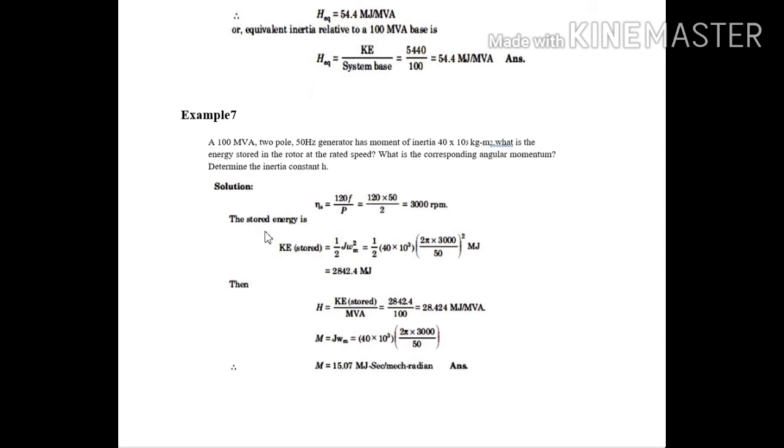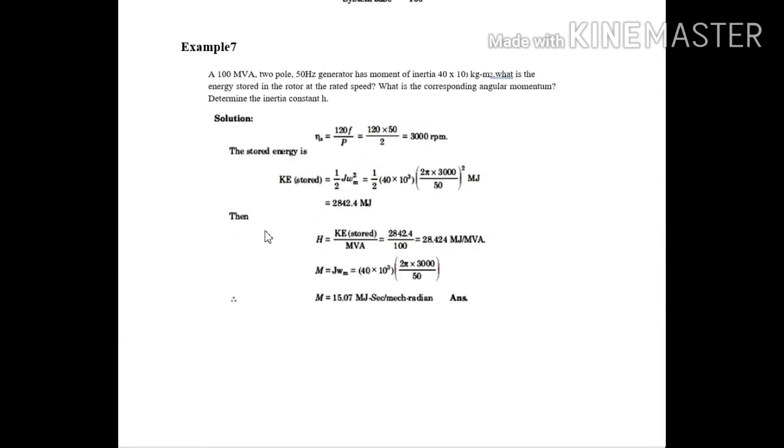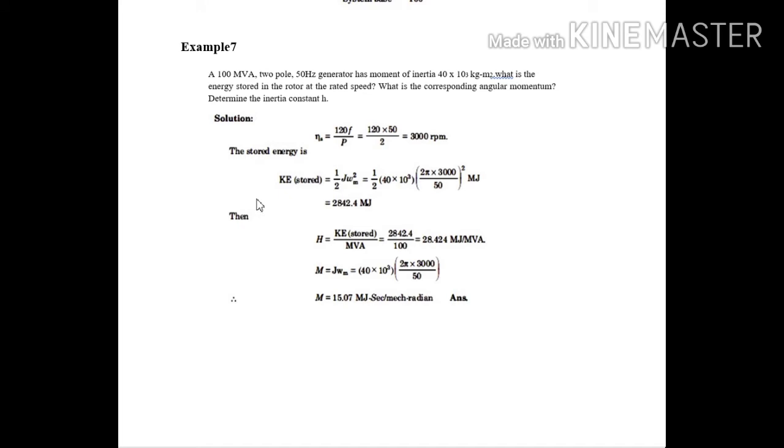Then second, the last one. I think this is our last problem from the unit 4 and 5. Again here, 100 MVA to 450 hertz generator has moment of inertia. The value of I or J, it is given, 40 into 10 to the power 3 kg meter square. What is the energy stored in the rotor at the rated speed? And similarly, what is the value of the capital M that is the angular momentum? And determine the inertia constant H.